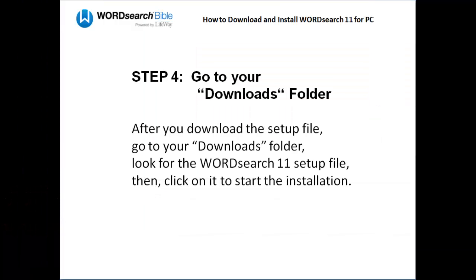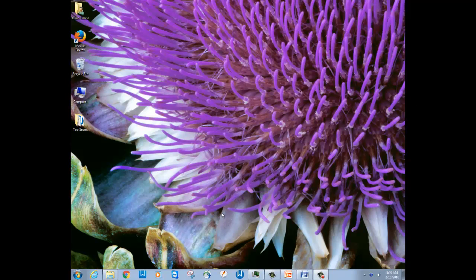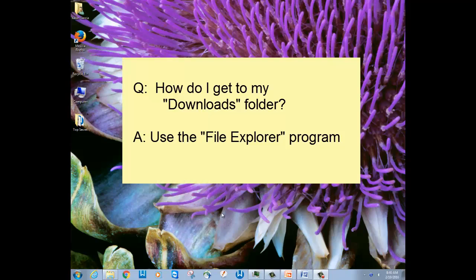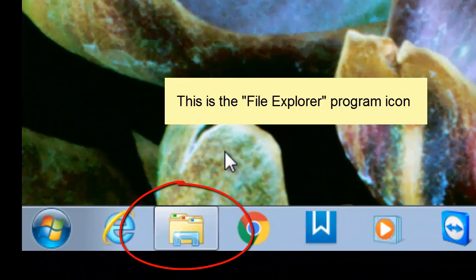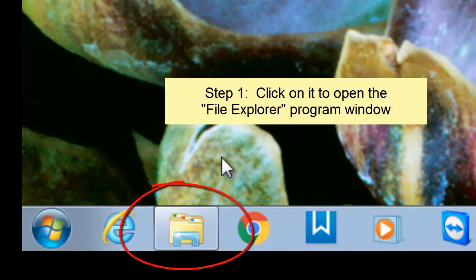Now that you have downloaded the WordSearch 11 setup file, you only have to do a few more easy things. Number one, you need to go to your Downloads folder. One easy way to find your Downloads folder is to use the Windows File Explorer program. To open it, look for the File Explorer icon at the bottom of your computer screen and click on it.